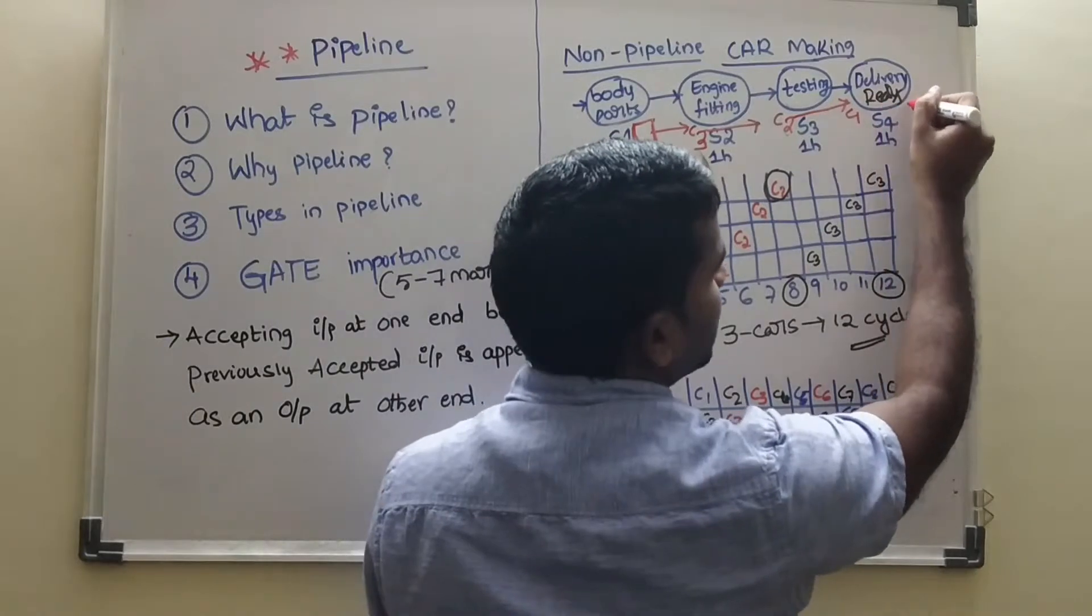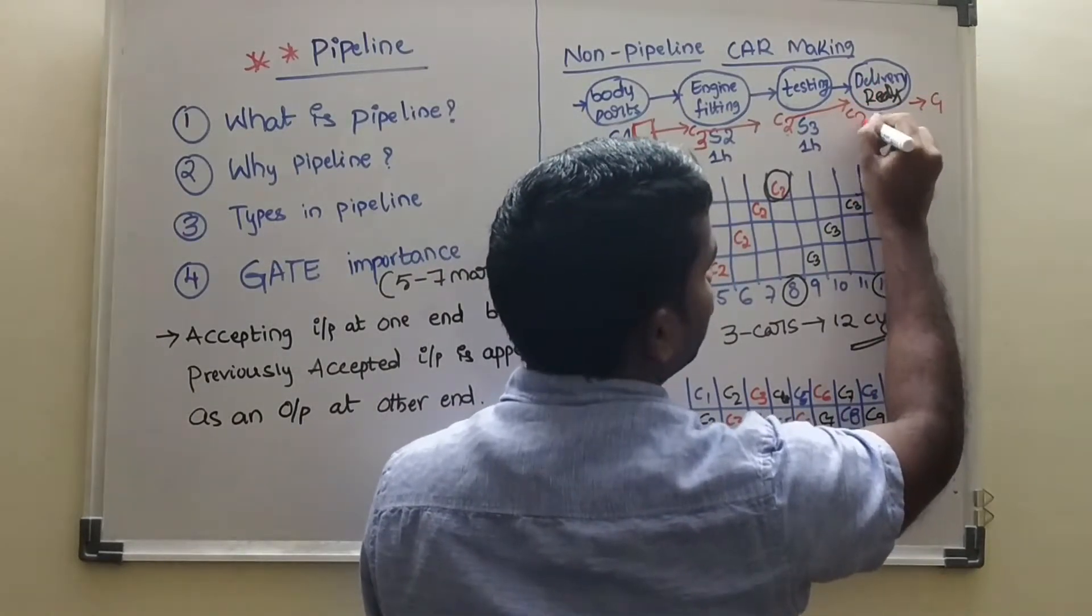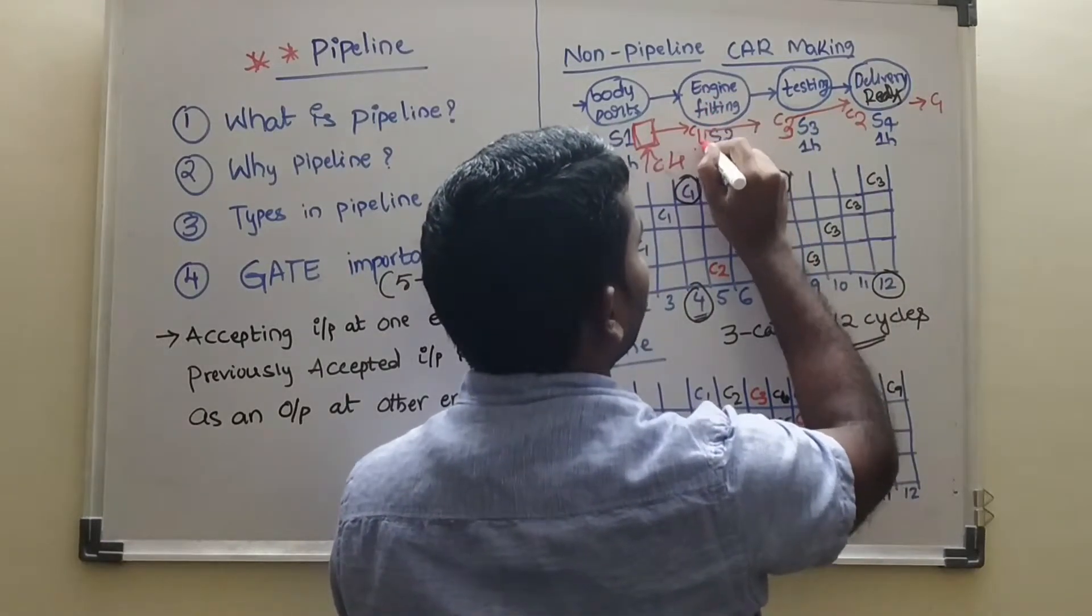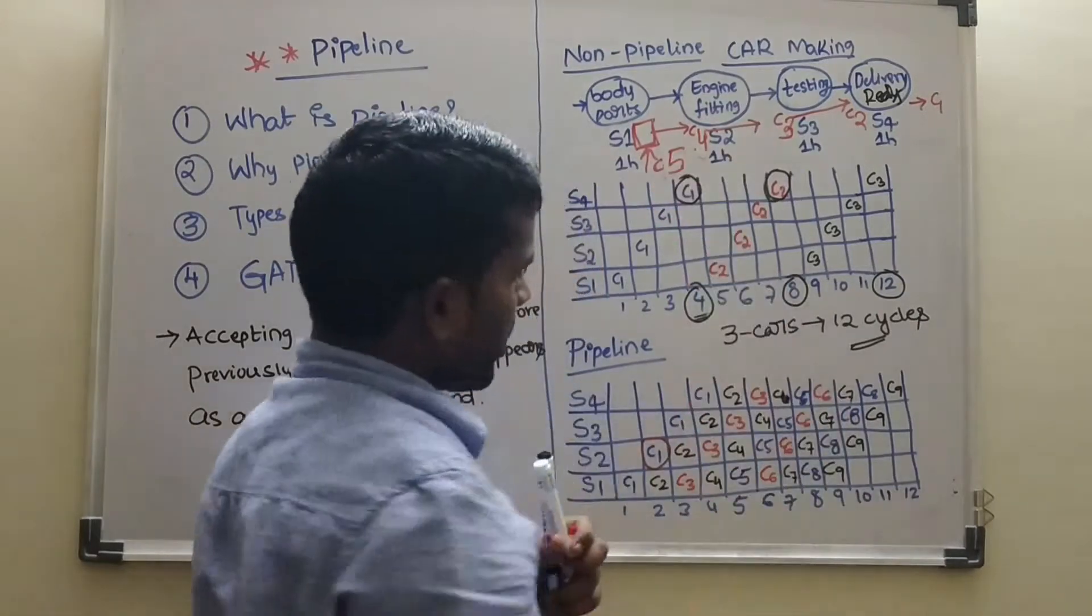After completion of this stage, C1 is completed. Then C2 will come. Then C3 and C4. We are ready to put one more car. So this is called pipeline.